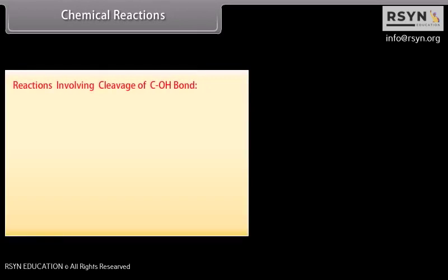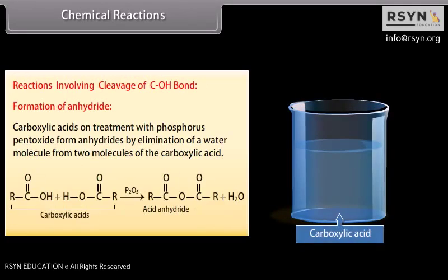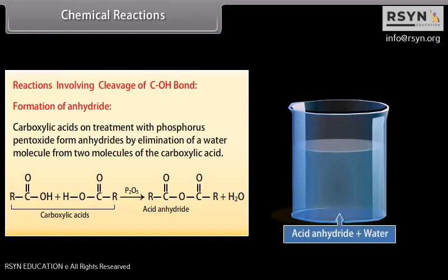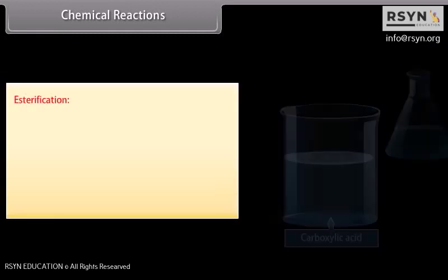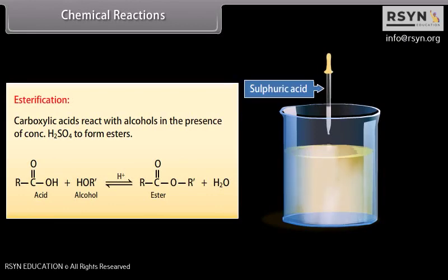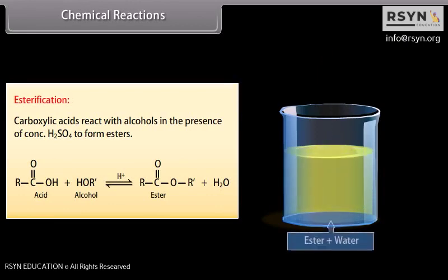Reactions involving cleavage of C-OH bond. Formation of anhydride: carboxylic acids on treatment with phosphorus pentoxide form anhydrides by elimination of a water molecule from two molecules of the carboxylic acid. Esterification: carboxylic acids react with alcohols in the presence of concentrated sulfuric acid to form esters.